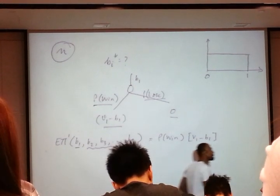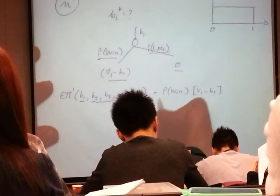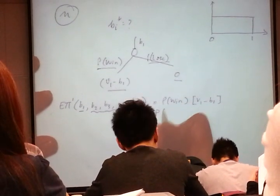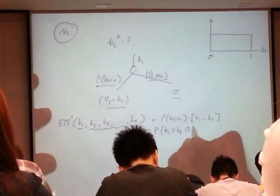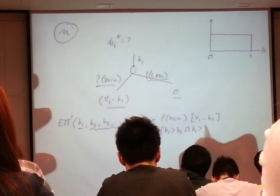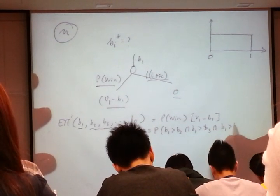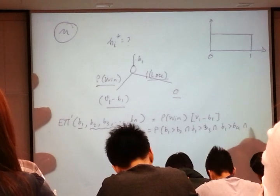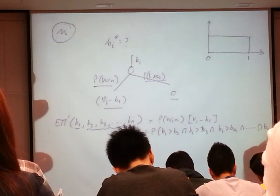What does that mean in mathematical terms? If you convert that to mathematics, probability of winning is probability my bid is greater than the second player's bid, and my bid is greater than the third player's bid, and my bid is greater than the fourth player's bid, and so on, my bid is greater than the Nth player's bid.